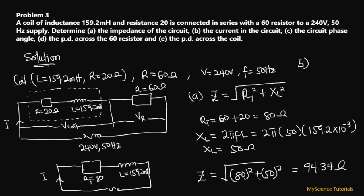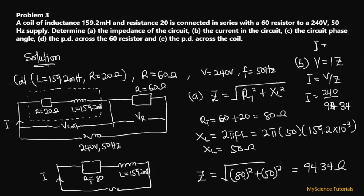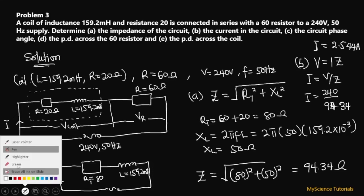For part (b), finding the current: I = V / Z = 240 / 94.34 = 2.544 amperes.